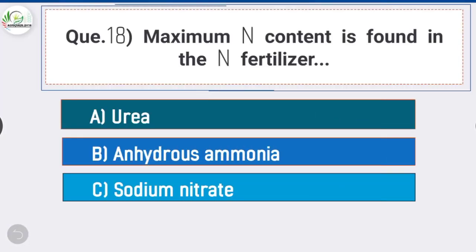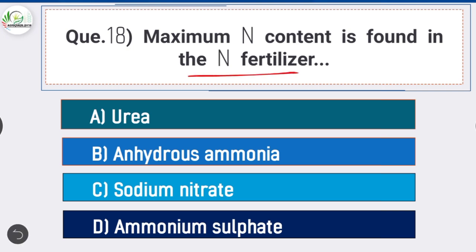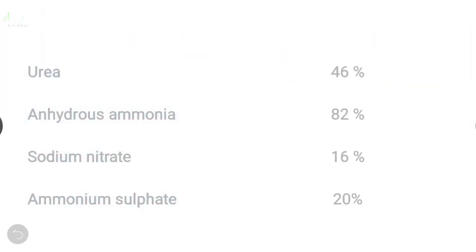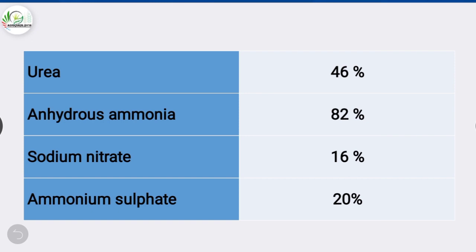Question number 18: Maximum nitrogen content found in nitrogenous fertilizer is? Answer is option B, anhydrous ammonia. Maximum nitrogen content is found in anhydrous ammonia. Urea contains 46% nitrogen, anhydrous ammonia contains 82% nitrogen, sodium nitrate contains 16% nitrogen, and ammonium sulfate contains 20% nitrogen.